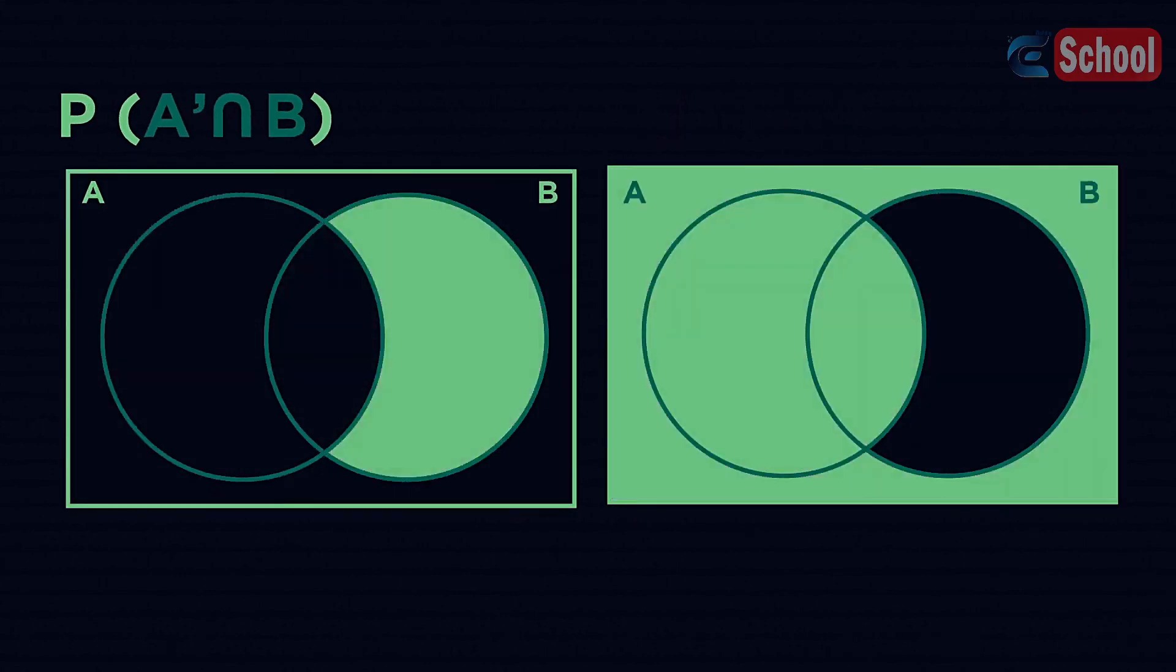Finally, P(A') intersection B. Try and find the inverse notation. How did you get on? P(A) union B'.